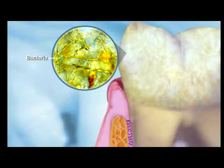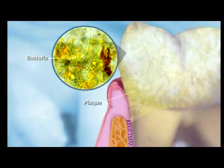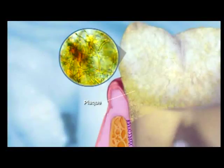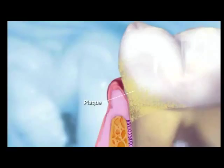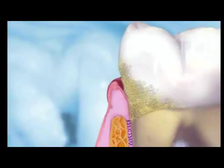Bacteria constantly forms a sticky colorless plaque on the teeth. Plaque that is not removed hardens to form bacteria-harboring tartar, also known as calculus. As calculus forms between the tooth and the gum tissue, inflammation of the gums occurs, which is known as gingivitis.